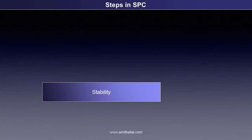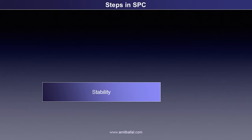The first step is to make the process stable. By stable, it means there are no special causes acting, so that the process will be able to give a sustained performance. Even if the process is capable — that is, CP, CPK or PP, PPK acceptable — it can become incapable at any point in time due to the occurrence of a special cause. We cannot predict whether a process capable today can be incapable tomorrow, or a process that is incapable today being capable tomorrow, unless the process is stable.